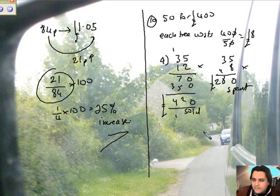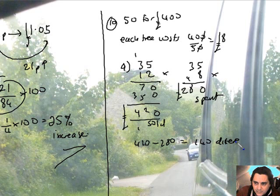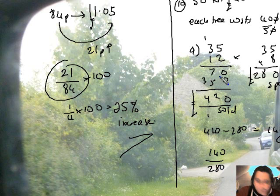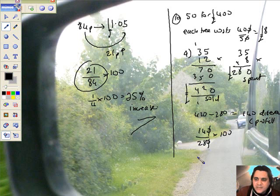Profit. The difference over the original. Sold for that, spent that. The difference is going to be, we've got £420 take away the £280, we've got there £140 difference, which is a profit. In other words, it's a profit because they've made some money on it. So difference over the original, they spent £280 on those 35 trees, multiply by 100. That goes in there twice, that's a half. 14 goes into himself once, it goes into 28 twice. Half of 100 is a 50% profit on those trees, which is really good.